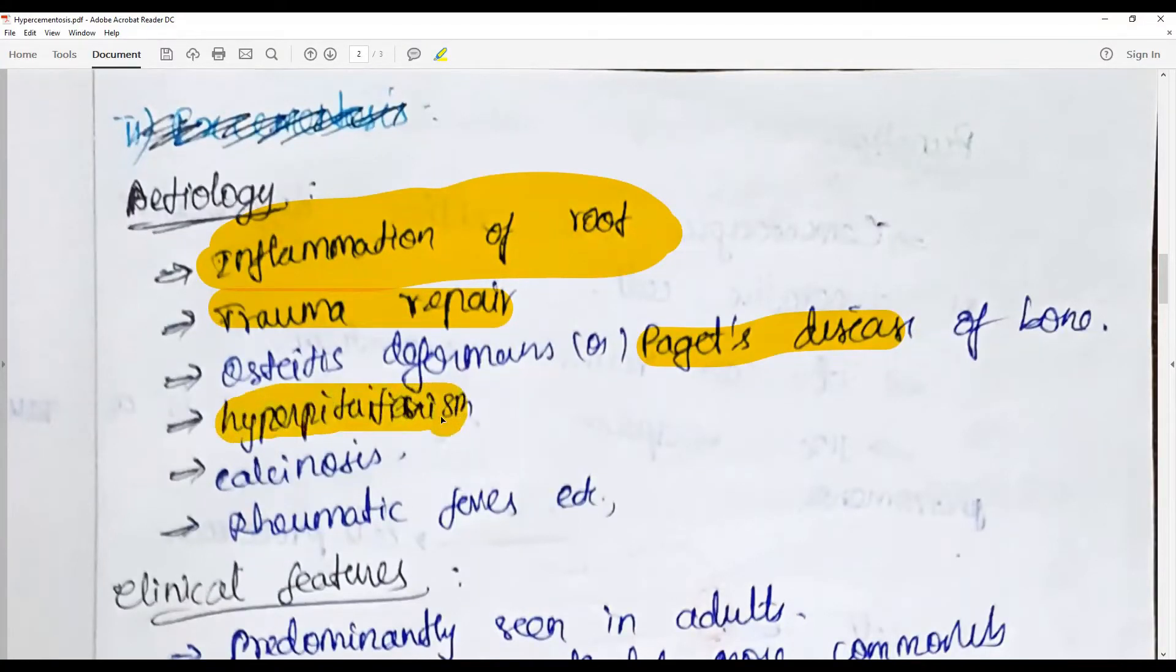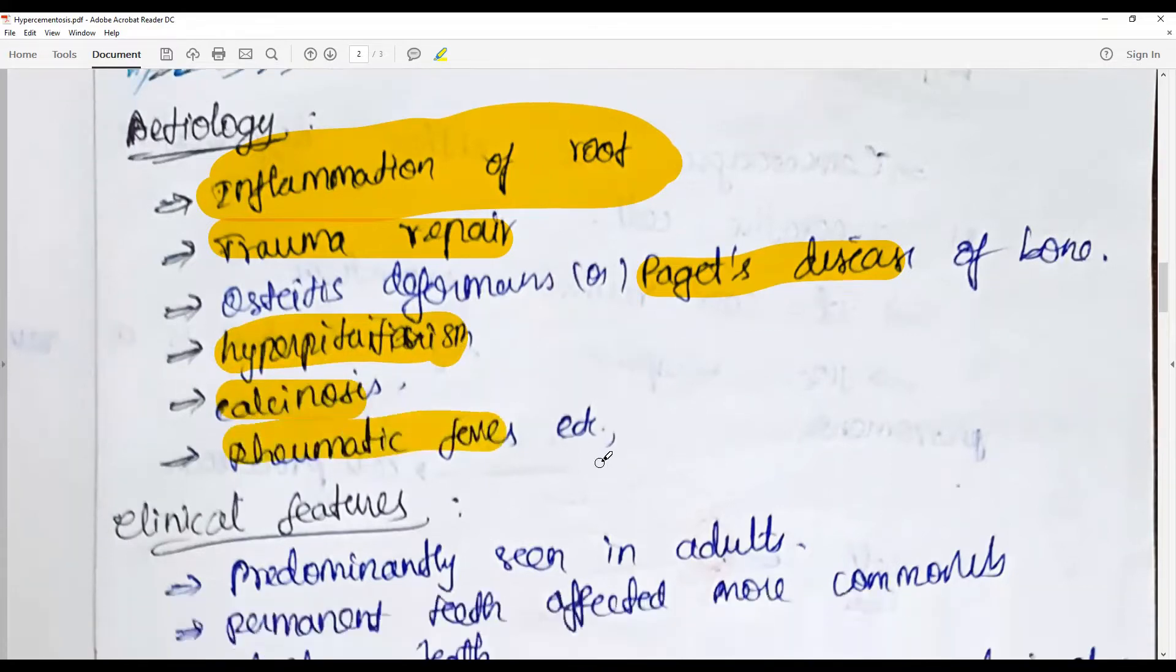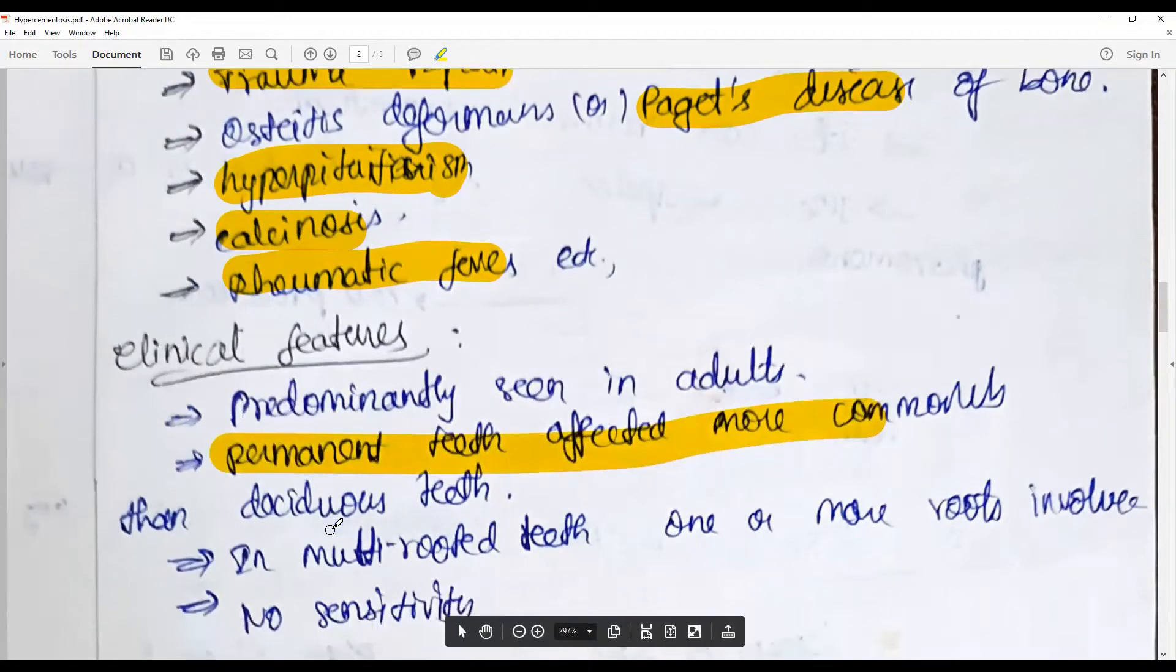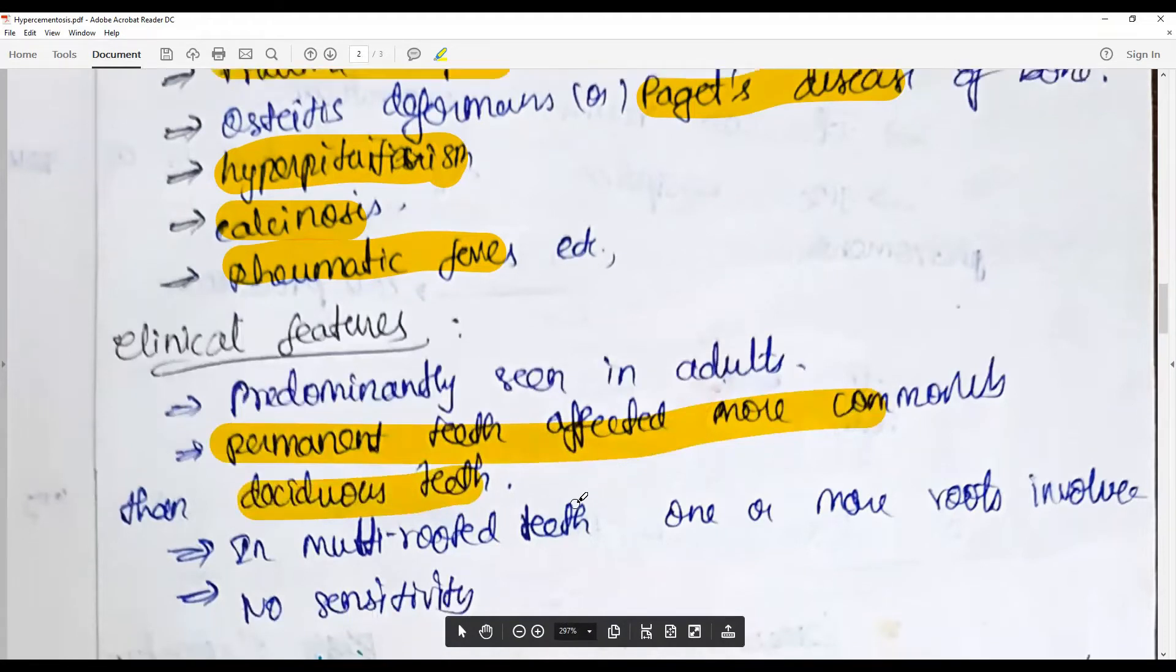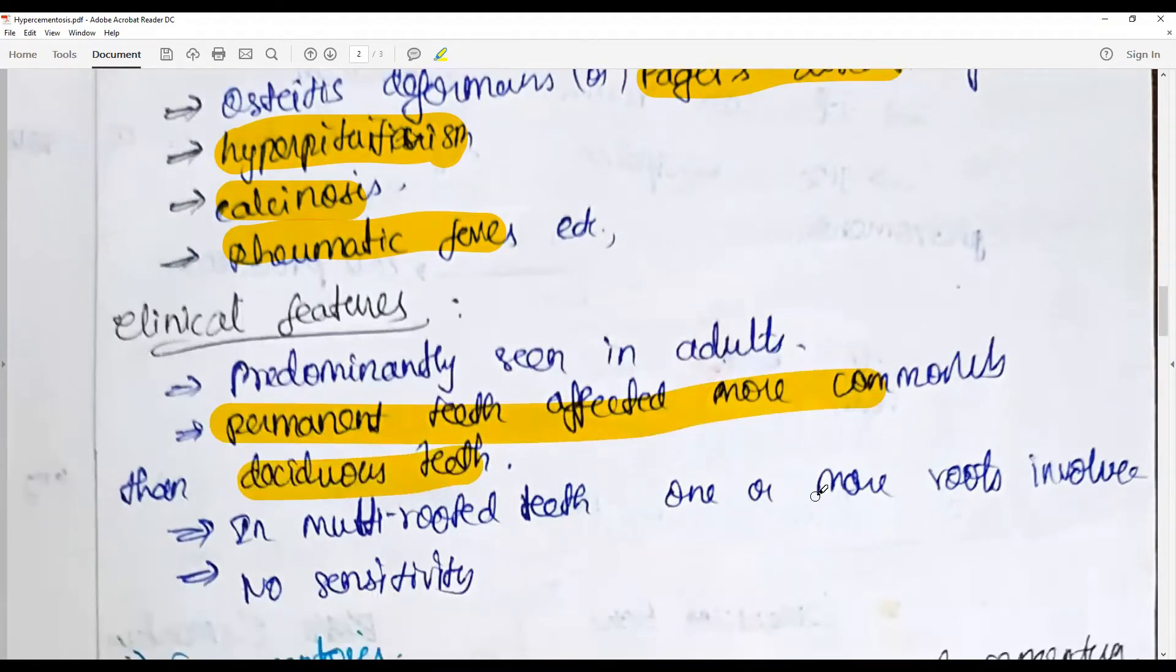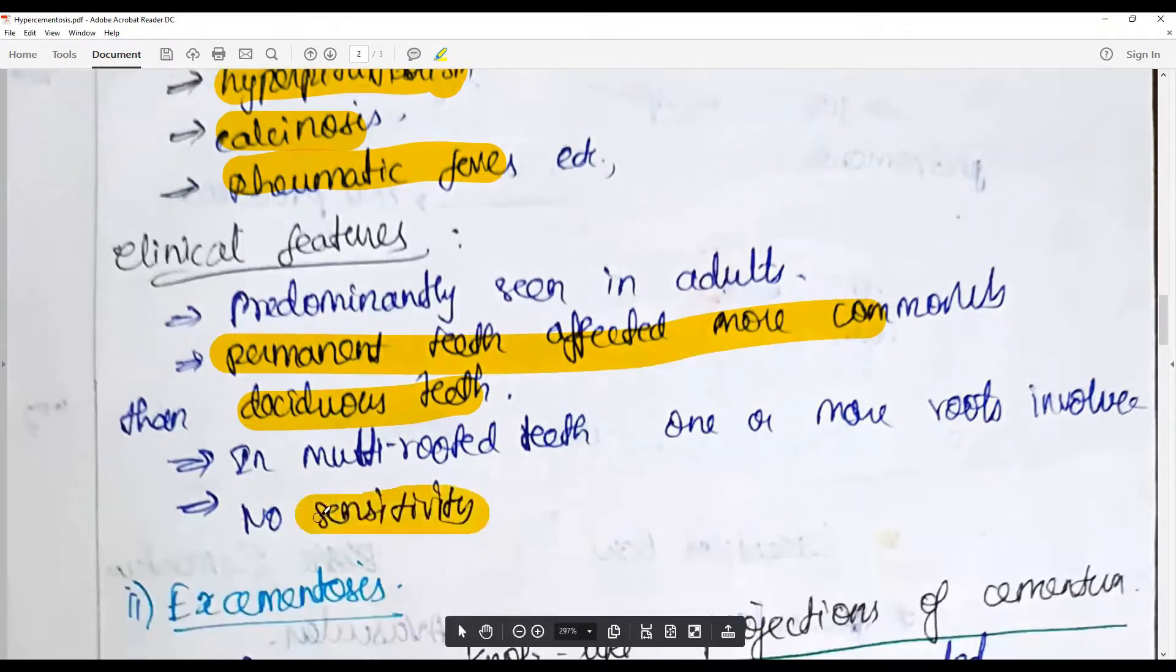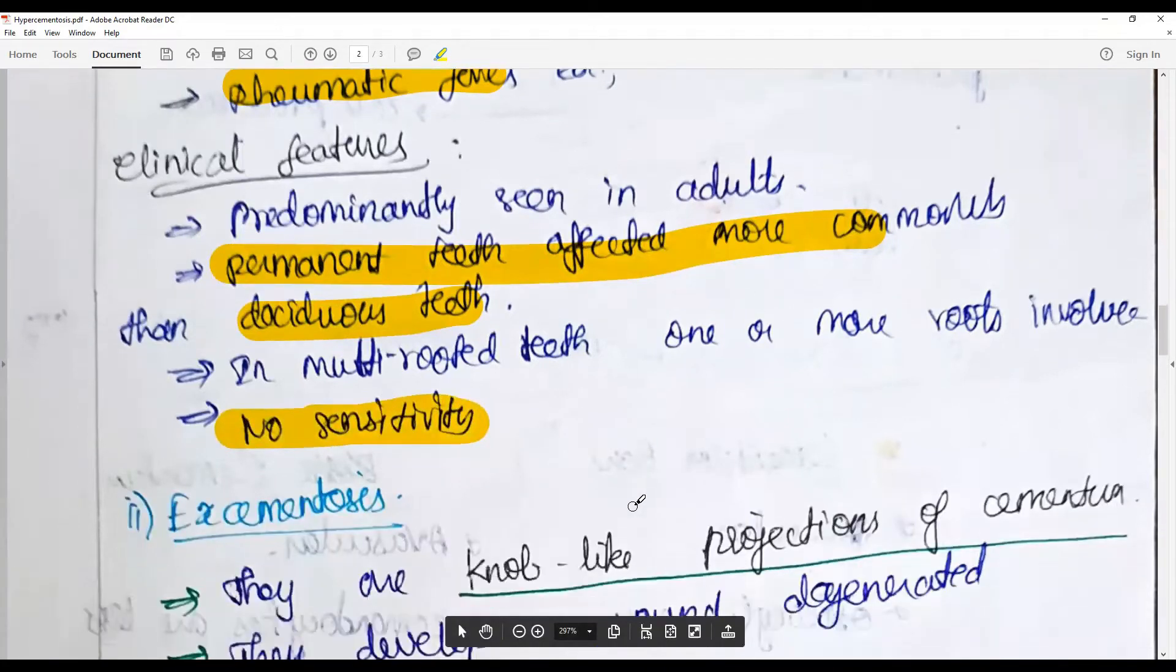Hormonal abnormalities such as hyperpituitarism, calcinosis, disease conditions such as rheumatic fever, etc. They are often seen in adults with permanent teeth being more commonly affected because of their longevity. Very rarely deciduous teeth are involved. In multi-rooted teeth, one or more roots are involved. Often there is no complaint or problem with sensitivity or abnormal sensation.